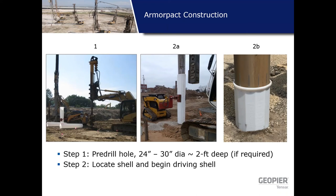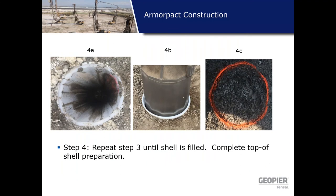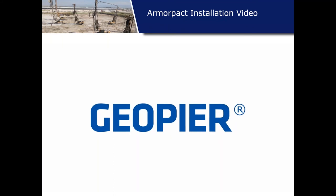To install ArmorPak: if there's a hard crust, you may pre-drill it, then use a displacement mandrel to push the HDPE shell into the ground. Once you reach the design tip elevation — founded in stiffer bearing material — you add aggregate to the top of the mandrel. It's a bottom-feed mandrel, so aggregate flows through down to the tip, creating rammed aggregate strokes back to the ground surface. Here's a photo of the HDPE shell before filling, the mandrel in the pier, and the finished ArmorPak pier.